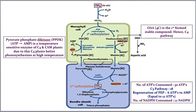Since one carbon from bicarbonate combines with the 3-carbon PEP, a 4-carbon compound is formed: oxaloacetic acid (OAA). This is the first carboxylation, and OAA is the first formed stable compound — which is why the pathway is called C4. The primary carbon acceptor in C4 pathway is PEP, compared to RuBP in the C3 pathway.